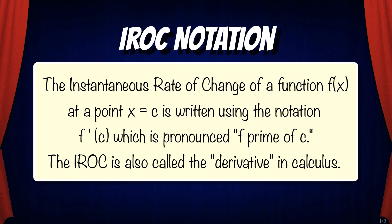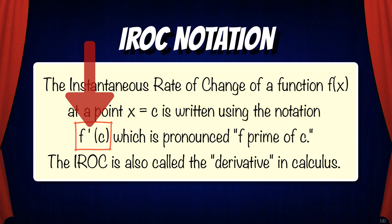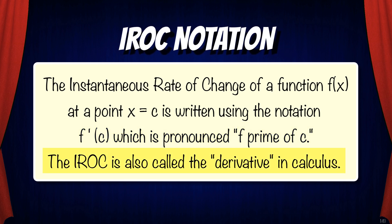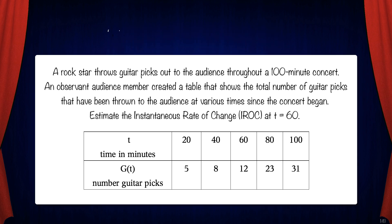First let's talk about some IROC notation. The instantaneous rate of change of a function f of x at a point x equals c is written using the notation shown here with the little tick mark. This is pronounced f prime of c. The IROC is also called the derivative in calculus.